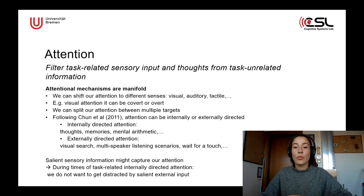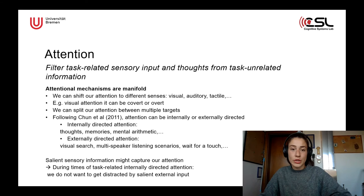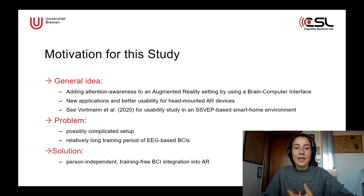This sensory salient information might capture our attention in times where we don't necessarily want that. For example, if we're internally focused and have a task-related internally directed attention, then we don't want to get distracted by salient external input. And most of the virtual information displayed in augmented reality is very salient. The motivation for this study is that, in general, we want to add attention awareness to an augmented reality setting by using a BCI.